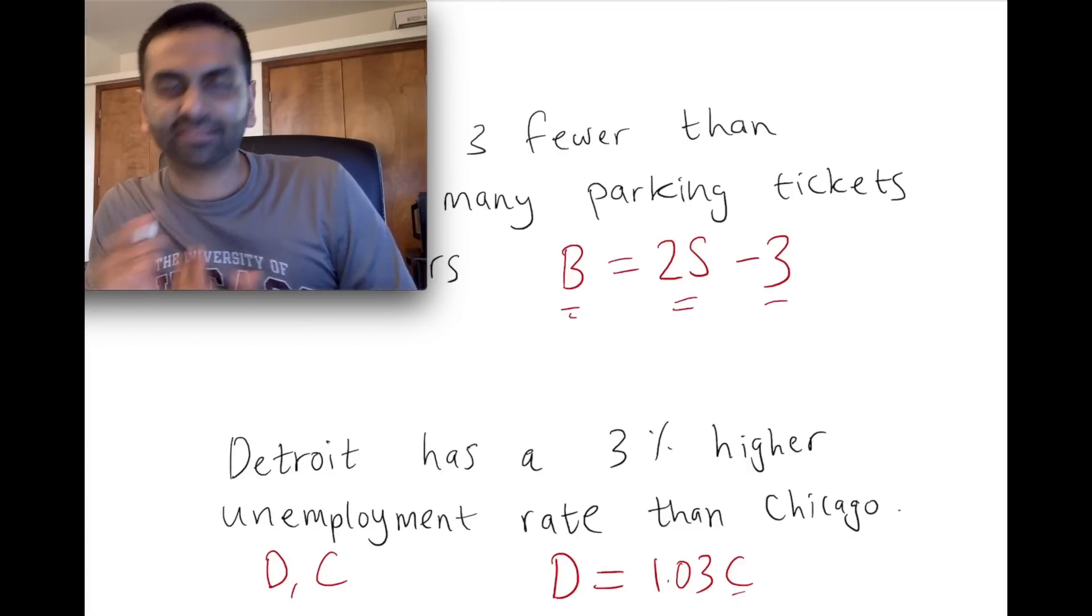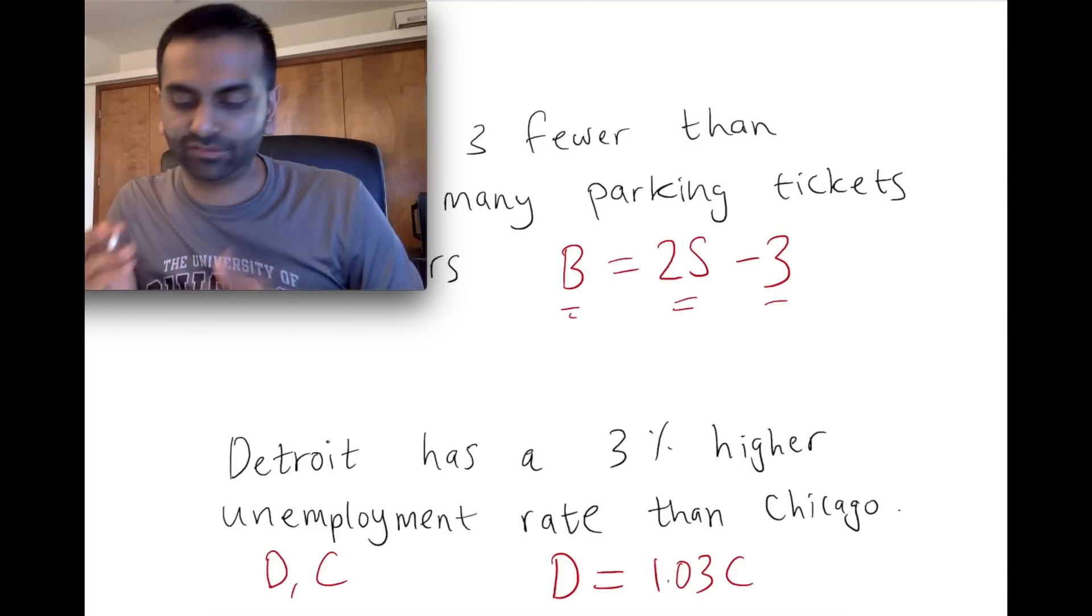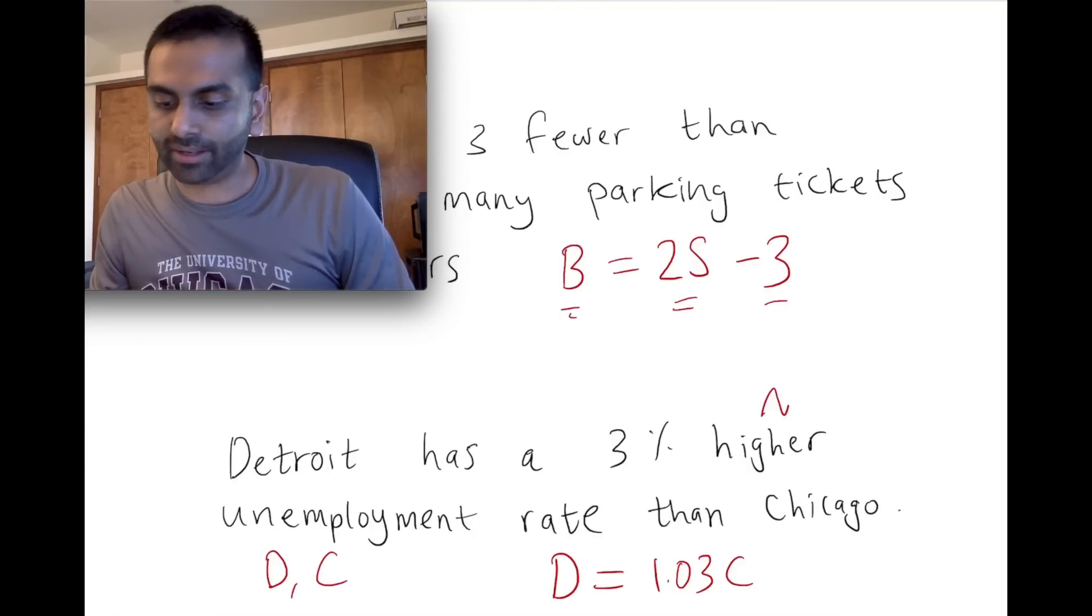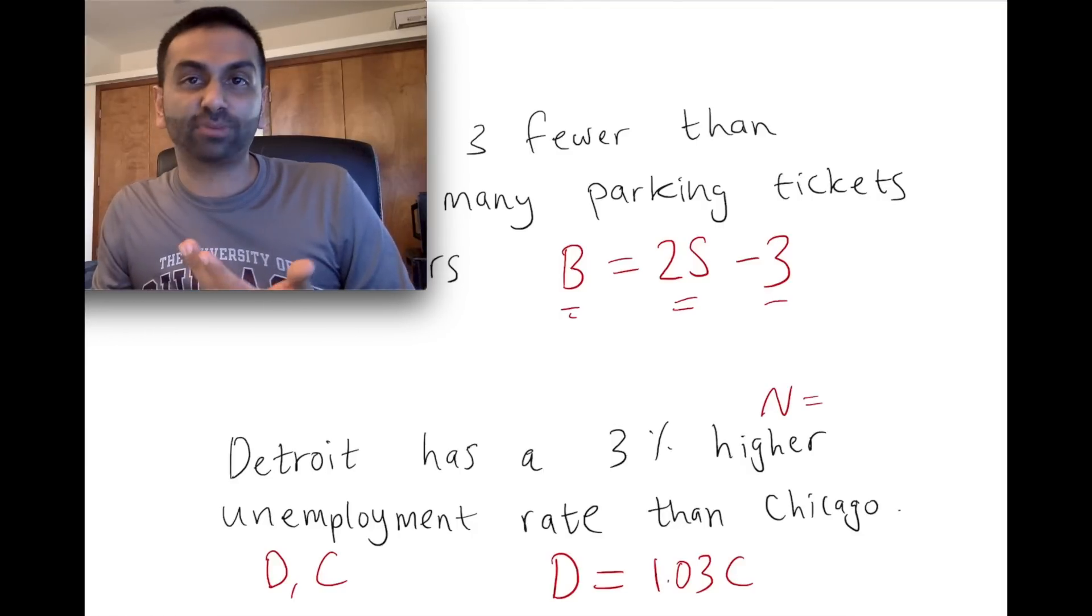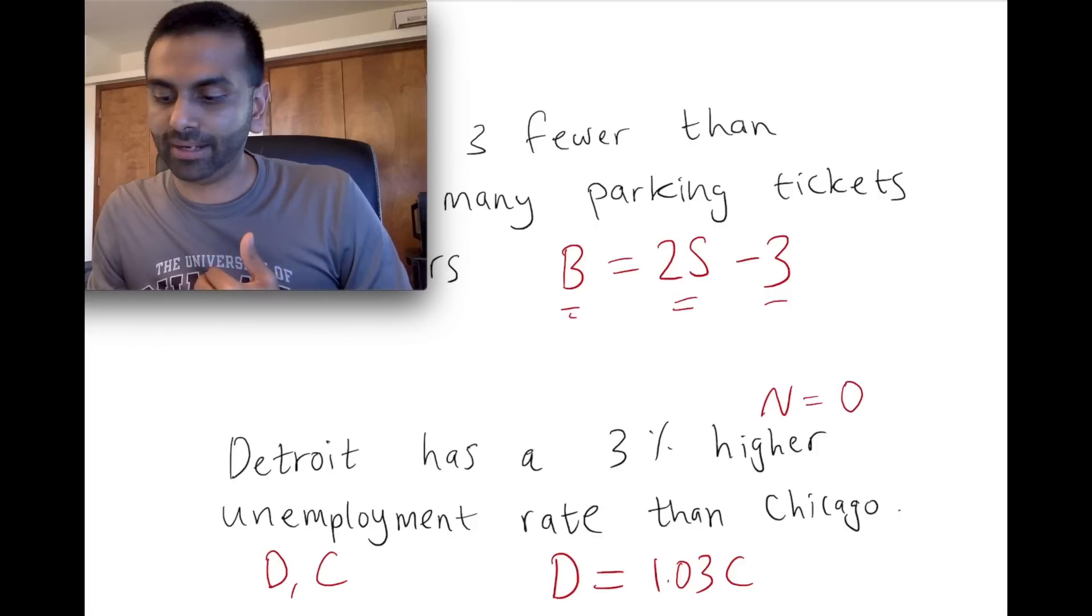If you wanted to say that something was three percent less than something else, then it's one minus that. So in the same context, if there was another city, let's say New York, and that was three percent lower than Chicago, then it's one minus 0.03, so 0.97